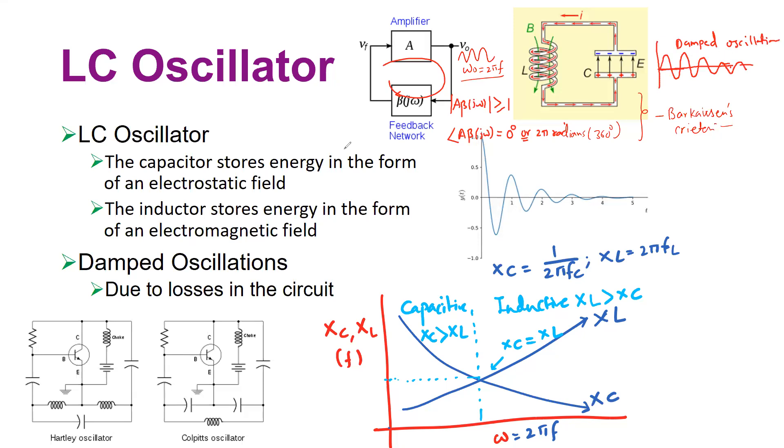LC oscillator operates on the principle that your capacitor stores energy in the form of electric field, your inductor stores energy in the form of an electromagnetic field. And here is the picture that you see, your oscillations started out, but for a practical LC circuit, your oscillations will die over the time.